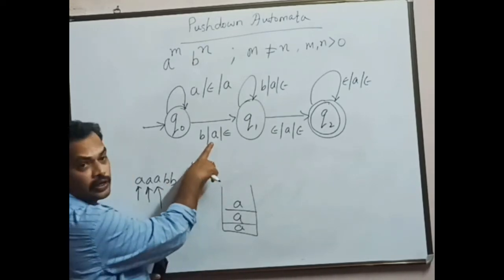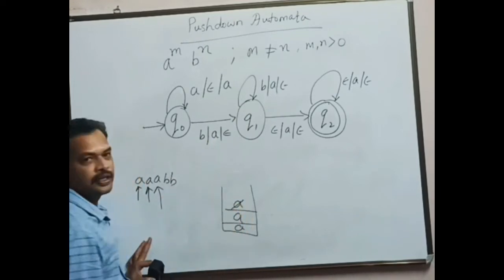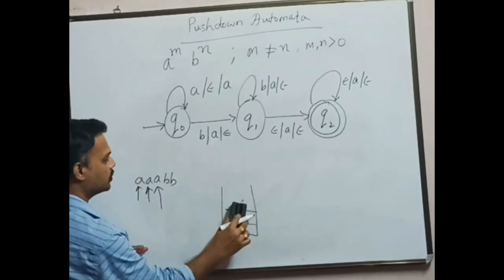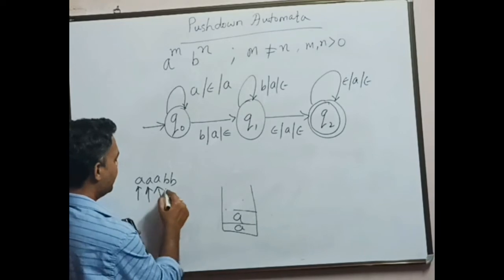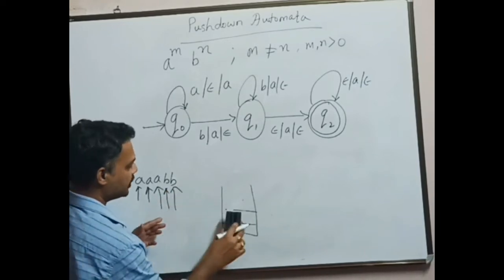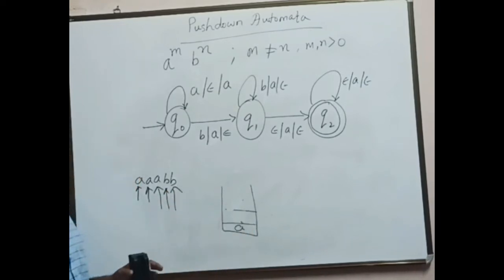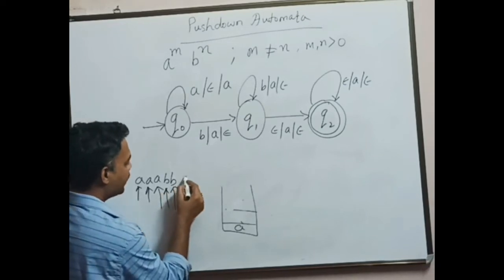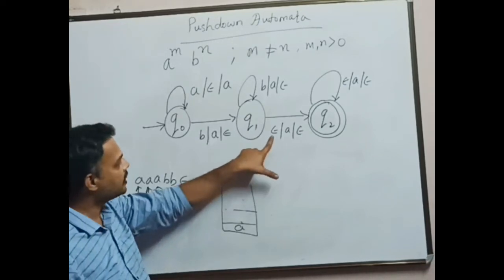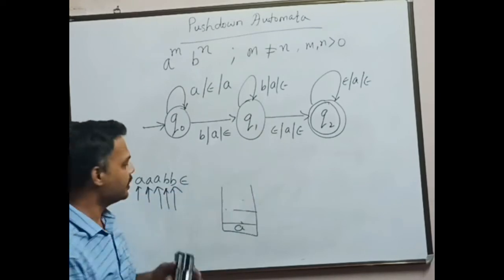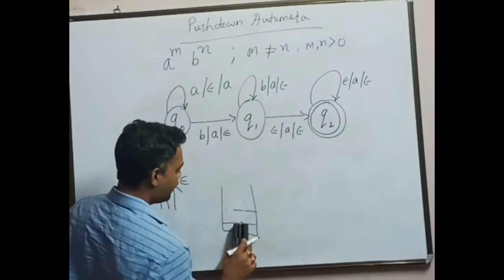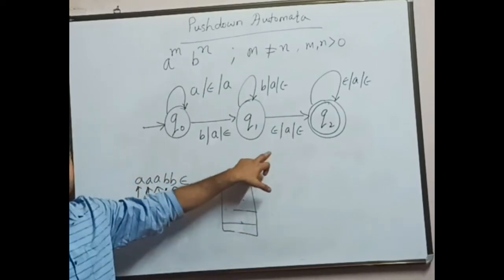Now b is encountered. As per the rule, when b is encountered, a is popped, so the first a goes. Next b is encountered, so the second a is also popped from the stack. Now the PDA comes across epsilon. When it comes across epsilon, this particular rule is fired.